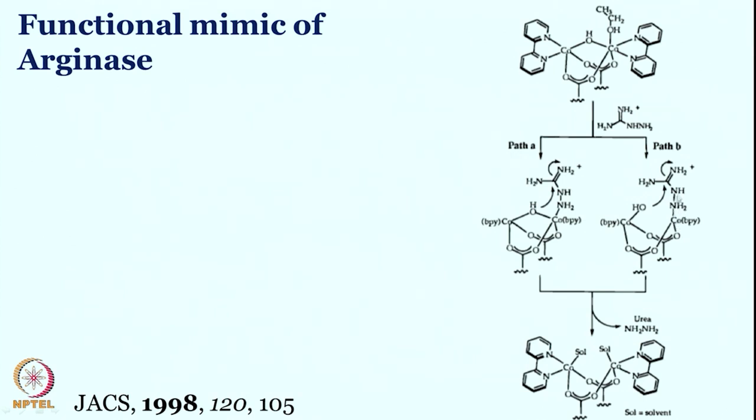Upon binding on the cobalt center, the bridging hydroxo snaps off one end, comes out, and this hydroxyl is now becoming a nucleophile. This is where a nucleophile and an electrophile on two different metal centers are very close to each other — the nucleophile is going to attack the electrophile — and therefore hydrolysis of this compound is possible and C-N cleavage will lead to urea formation. Alternatively, both cobalts are attached with the substrate and then the nucleophilic attack is happening.